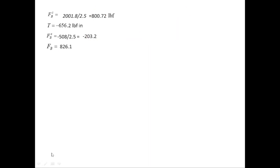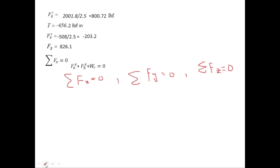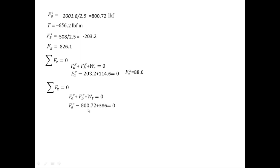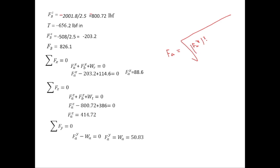To find forces at bearing A, applying sum of forces in x, y, and z directions to zero: for x, FAx + FBx + Wr = 0, giving FAx = 88.6 lbf; for z, FAz + FBz + Wt = 0, giving FAz = 414.2 lbf; for y, FAy − Wa = 0, giving FAy = 50.83 lbf (this is the thrust load). The resultant FA = √(FAx² + FAy² + FAz²) = 427 lbf.